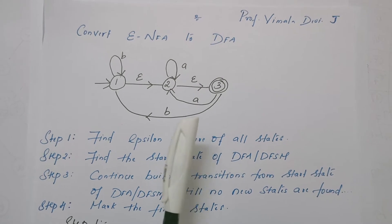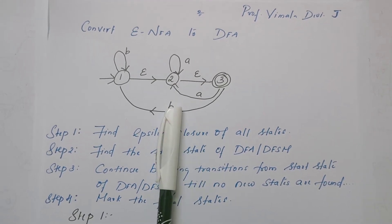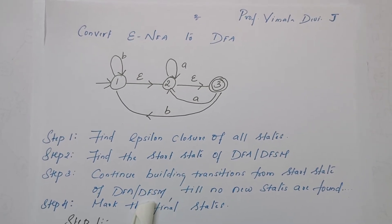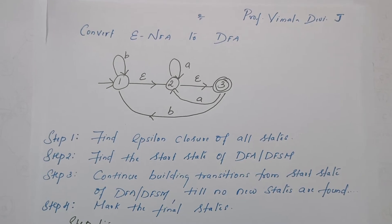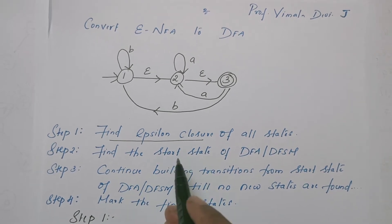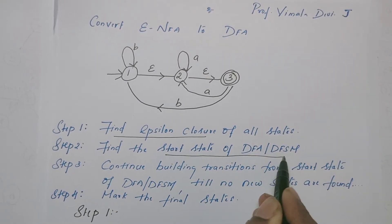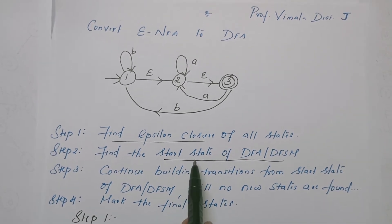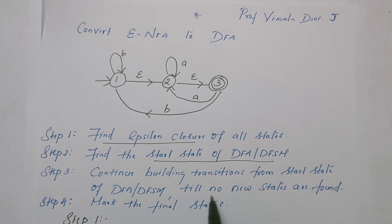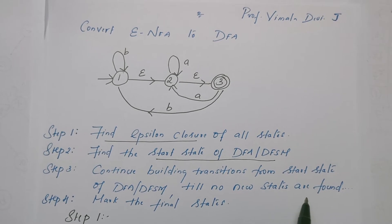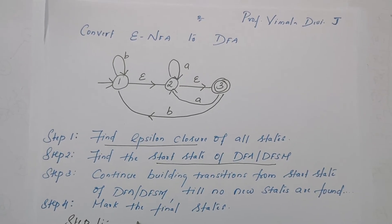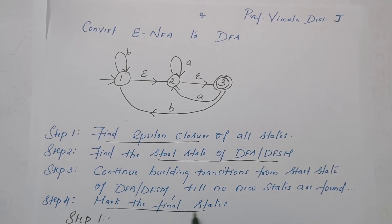This is a given NFA transition diagram. From this NFA, we are supposed to identify its equivalent DFA. There are four steps to follow. Step 1: find the Epsilon closure of all states. Step 2: find the start state of the DFA. Step 3: from the start state of the DFA, continue to build transitions until no new states are identified. Step 4: identify the final states.